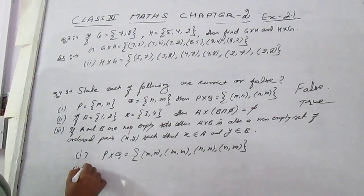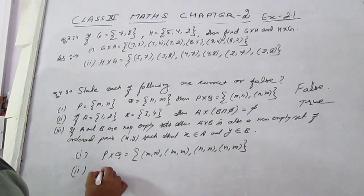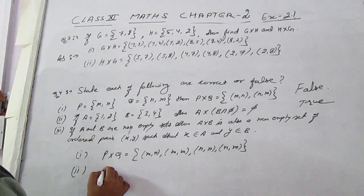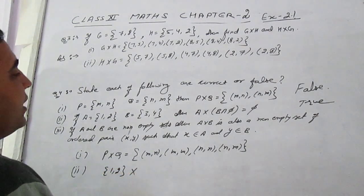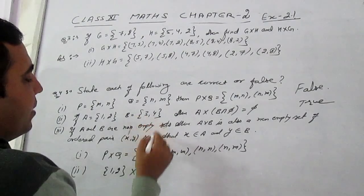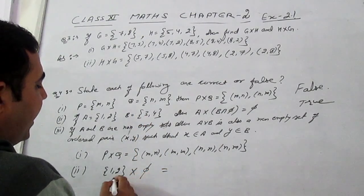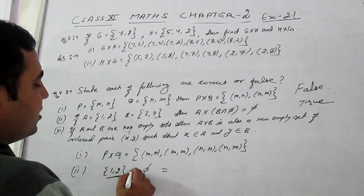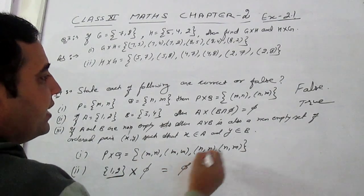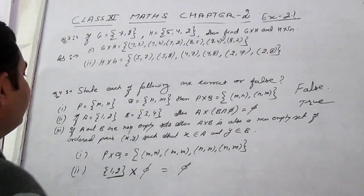Let us check out A cross B intersection phi. Then A is (1,2) cross B intersection phi, we get B intersection phi as phi. And any set, if we find out its Cartesian product with phi, we get phi. Then it is true.